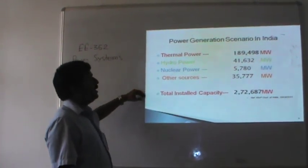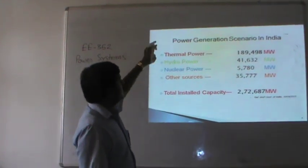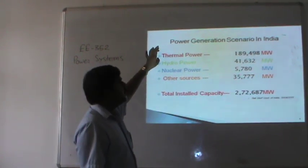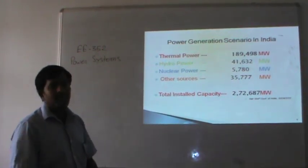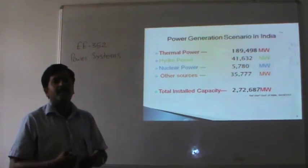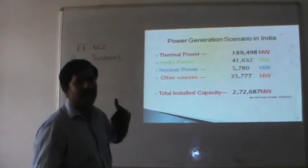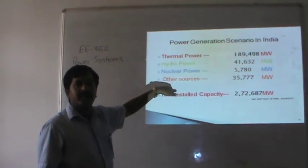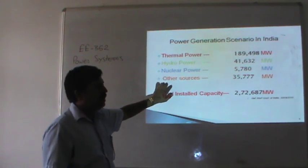The purpose of this slide is to show that the major portion of electricity in India comes from thermal power — around 67% of electricity is generated from thermal sources. Since these conventional sources are being depleted day by day, we have to decrease our dependency on them and increase electricity production from renewable energy sources like solar, wind, biomass, tidal, and so on.